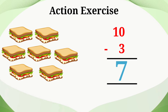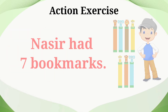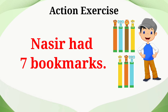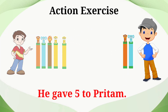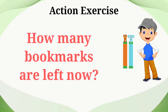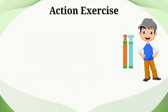Let's see the next example. Nasir had 7 bookmarks. He gave 5 to Pritam. So, how many bookmarks are left now? 1, 2. The subtracting form is 7 minus 5 is equal to 2.